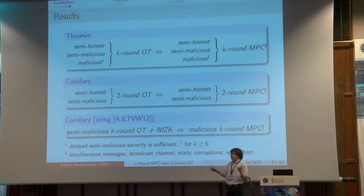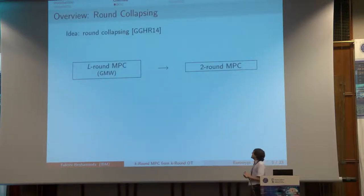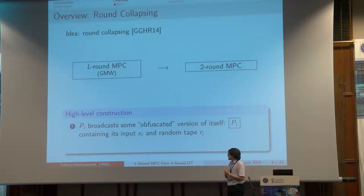Going back to our results, I'll focus on the semi-honest case and the covert case, which will give you the main idea of our construction. We start from this very nice work from 2014 which introduced the idea of round collapse. Essentially, they started from an L-round MPC protocol and collapsed all the rounds into just two rounds.